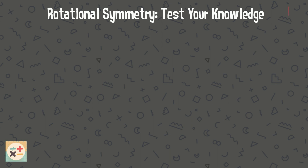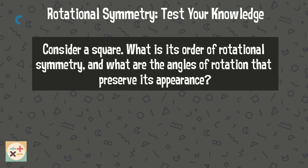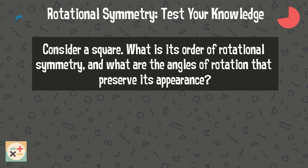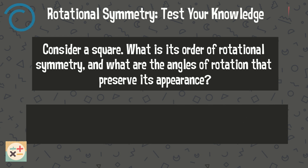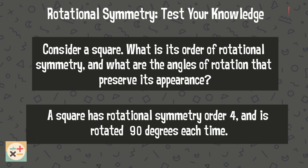Question 6: Consider a square. What is its order of rotational symmetry, and what are the angles of rotation that preserve its appearance? A square has rotational symmetry of order 4, and is rotated 90 degrees each time.